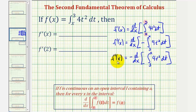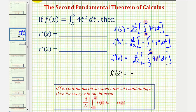Now using our theorem, we can easily find the derivative of this integral. f prime of x is going to be equal to the opposite of — and now we simply substitute x for t — so f prime of x is equal to negative four x squared.